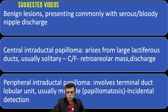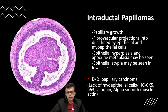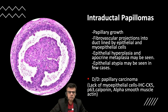Looking at the microscopic features, there is a characteristic papillary growth. There are fibrovascular cores, and these fibrovascular cores are lined by both epithelial cells and myoepithelial cells — both are present in the lining of these papillary fibrovascular cores.